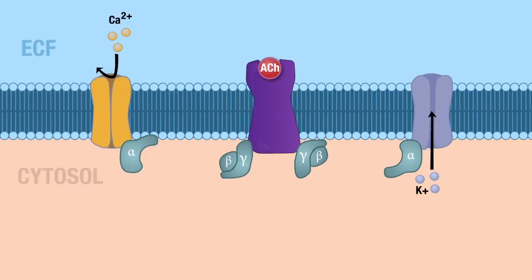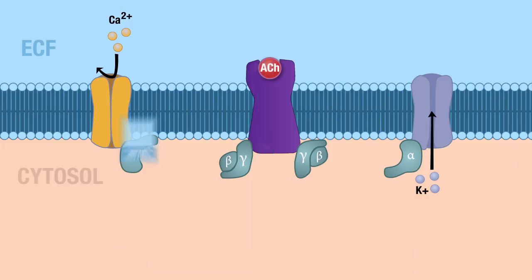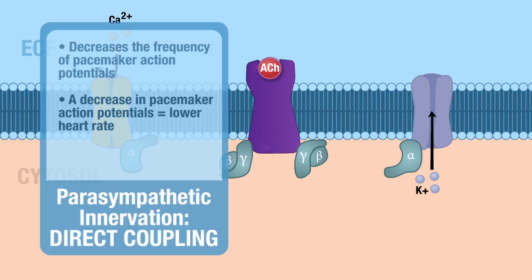The combined effect of 3A and 3B is to decrease the frequency of the pacemaker action potentials. If you decrease the frequency of the pacemaker action potentials, this lowers heart rate, and lowering heart rate lowers cardiac output. This means the SA node is firing less frequently than it normally would with parasympathetic innervation. That concludes our discussion on how the parasympathetic nervous system regulates heart rate.